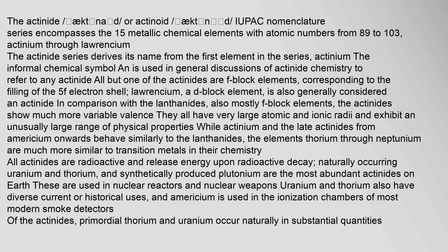In comparison with the lanthanides, also mostly F-block elements, the actinides show much more variable valence. They all have very large atomic and ionic radii and exhibit an unusually large range of physical properties. While actinium and the late actinides from americium onwards behave similarly to the lanthanides, the elements thorium through neptunium are much more similar to transition metals in their chemistry.